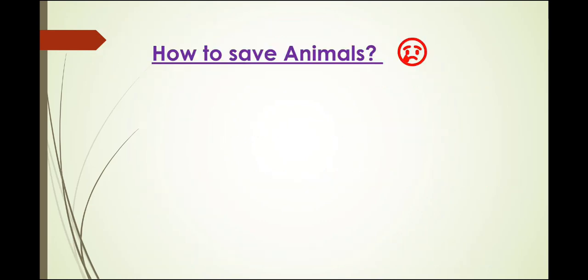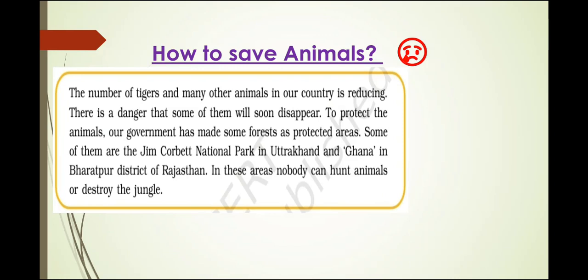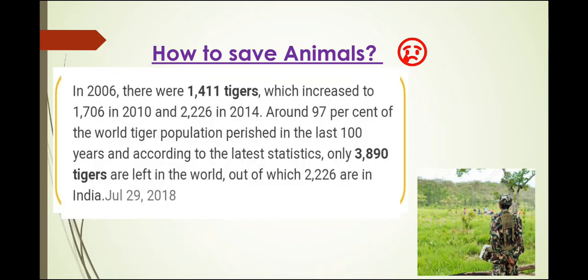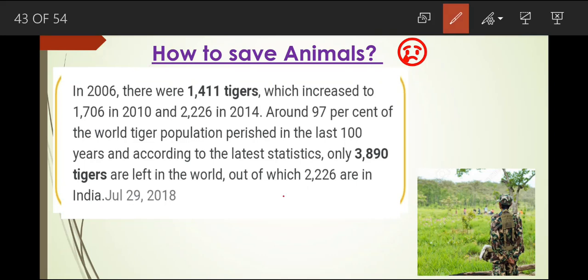So the question is: how do we save animals, and who will save them? Our government will save them. To protect animals, our government has made some forests into protected areas. Some of them are Jim Corbett National Park in Uttarakhand and Ghana National Park in Bharatpur district of Rajasthan. In these areas nobody can hunt animals or destroy the jungle. As you can see, there are only 2,026 tigers left in India according to 2018 data — so you can think how few tigers are remaining.